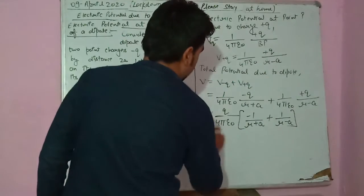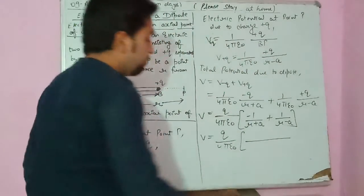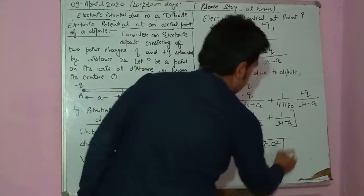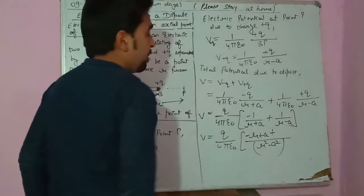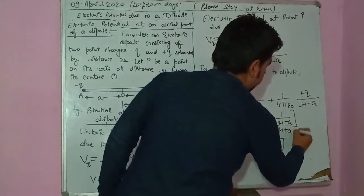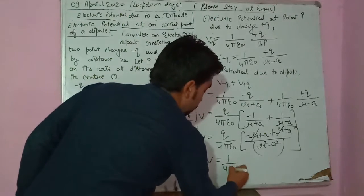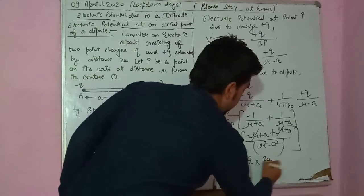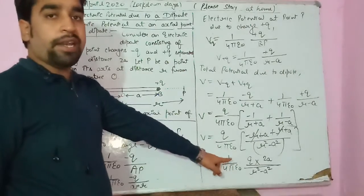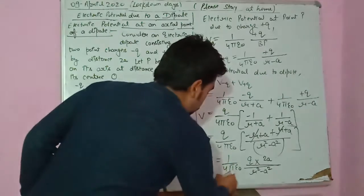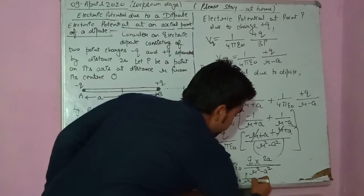Taking the LCM of (R+A) and (R−A), which gives R²−A². Simplifying the numerator: −(R−A) + (R+A) = 2A. So V = (Q/4πε₀)(2A/(R²−A²)). Since Q × 2A equals the dipole moment p, we get V = (1/4πε₀)(p/(R²−A²)).